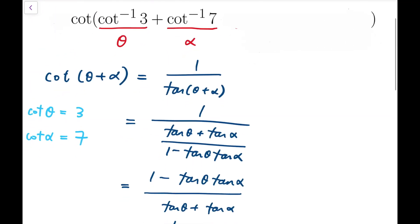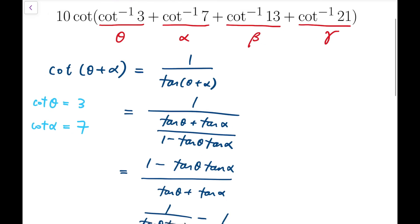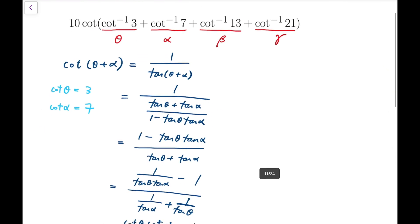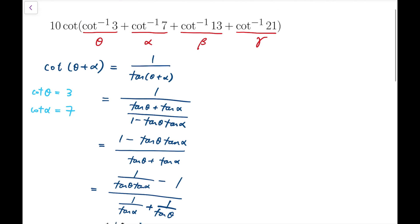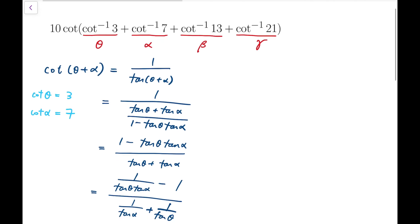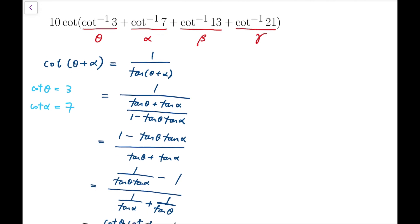Now, back to the main problem. So let me unhide the other numbers. Now, from what we've done, we know that cotangent of the two angles theta and alpha, when we add them, we get 2.